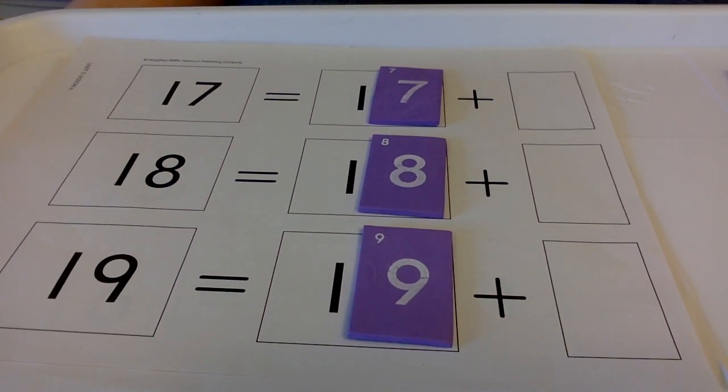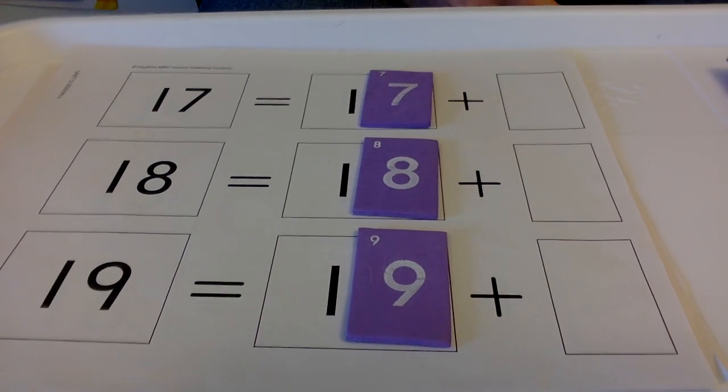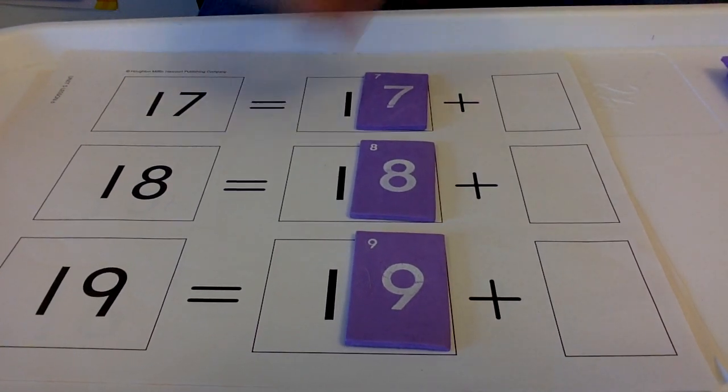All right, today we're going to play the hidden zero game. If I say 18, we would move the 8, and then remember, together we say 18 equals 10 plus 8.